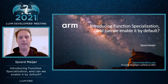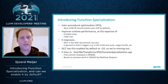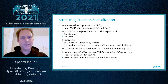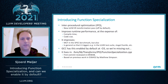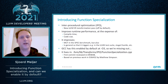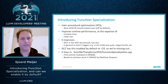Today I want to introduce a new optimization called Function Specialization. Function Specialization is a new interprocedural optimization, or IPO in short, and it's an LLVM IR transformation pass or optimization, and at the moment it's off by default. Its aim is to improve the runtime performance of applications at the expense of compile time and code size, which are very important things we'll be talking about later.